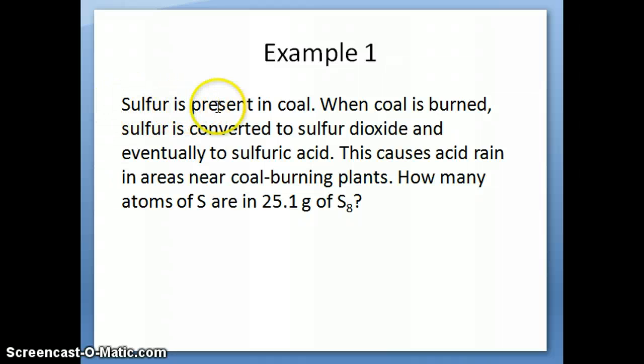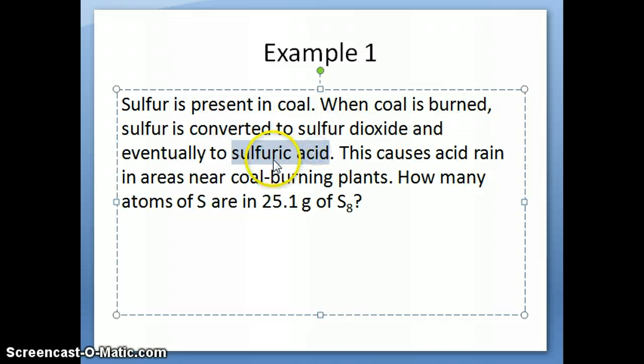Just as a general note, sulfur is an element that's present in coal, and in the United States, there's still quite a bit of coal burning plants in various areas of the country. When you burn coal, the sulfur part of the coal is actually converted to sulfur dioxide, which, when combined with water, can lead to formation of sulfuric acid.